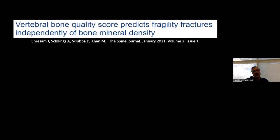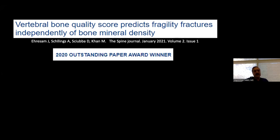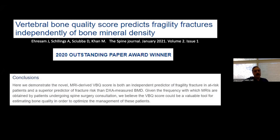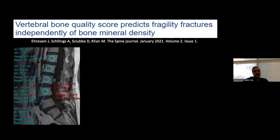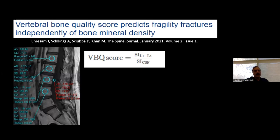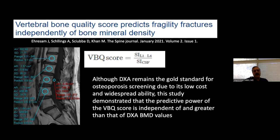Because we get lots of MRI in these patients, we came up with the vertebral bone quality (VBQ) score based on MRI, and compared it to DEXA scan to see how it predicts fragility fractures independent of bone mineral density. We published several papers on VBQ scores — it was an outstanding paper at NASS in 2020. Basically, we take signal intensity from L1 to L4, divide it by the signal intensity of the CSF, and come up with the VBQ score. It showed really good correlation with DEXA scan for predicting osteopenia and osteoporosis.